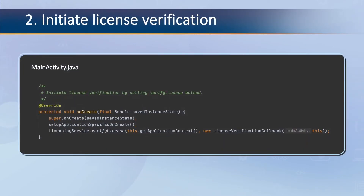The second step is to initiate the license verification by calling the verifyLicense method. This method is exposed in the LicensingService class and takes two parameters as input: application context and your implementation of LicensingListener. You can initiate the license verification when your application launches, either in the onCreate method of your main activity or in the onCreate of a custom implementation of the Application class.